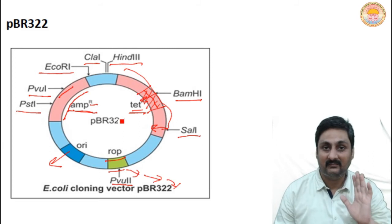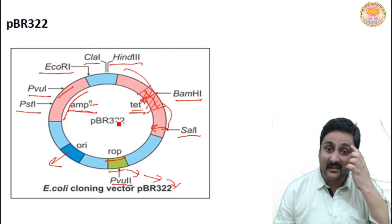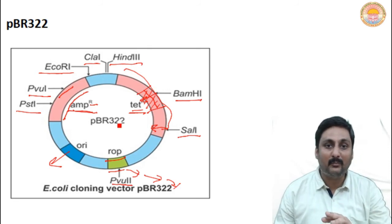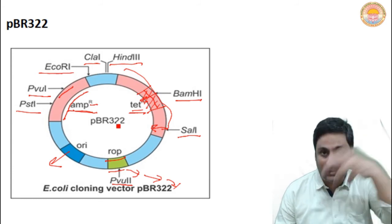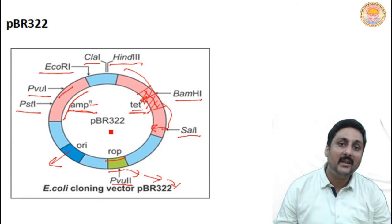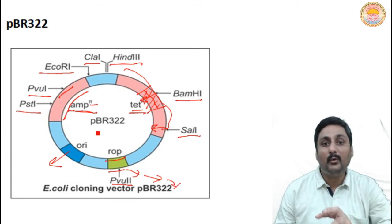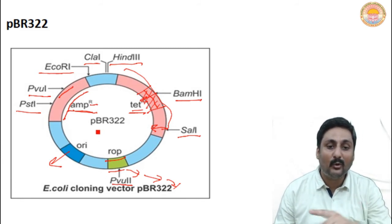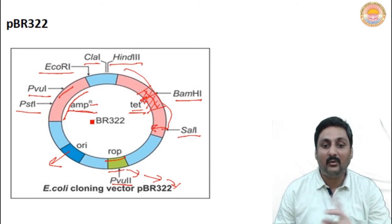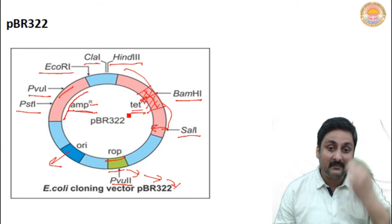This process is called insertional inactivation. In this process, we sometimes need to change the antibiotic twice — first to see whether transformation occurred and the vector entered, and then to see whether the desired DNA that was inserted into the vector has also come in along with it. So for two different purposes we use two different antibiotic solutions — first ampicillin solution, then tetracycline solution.